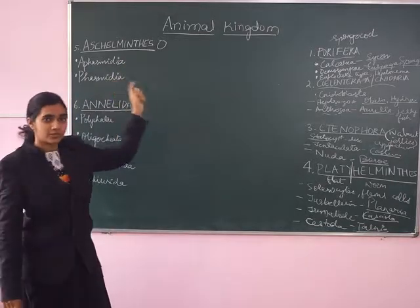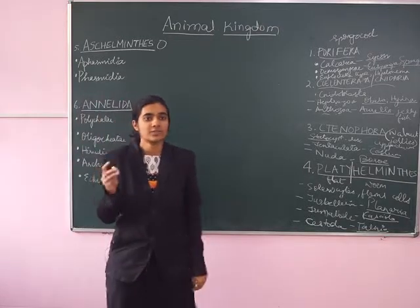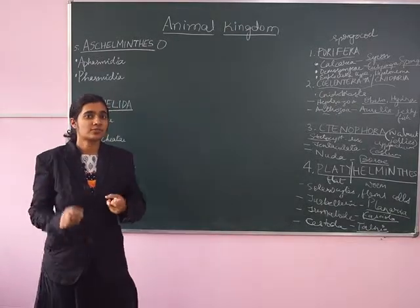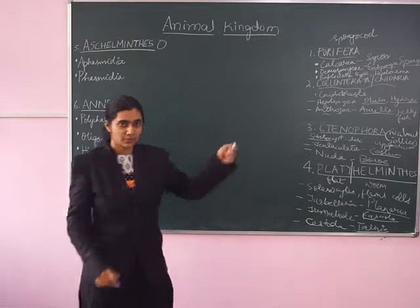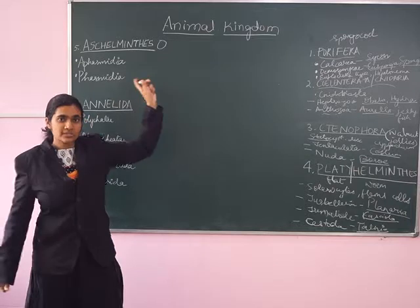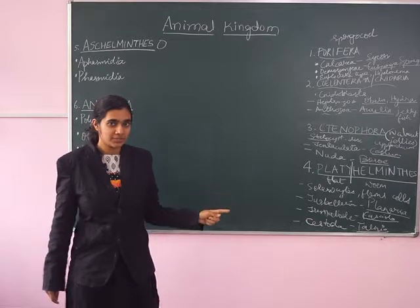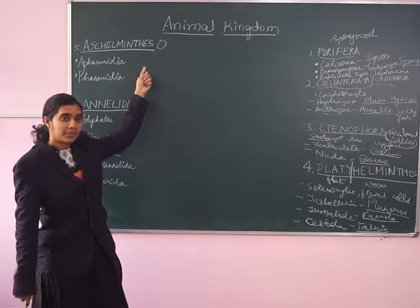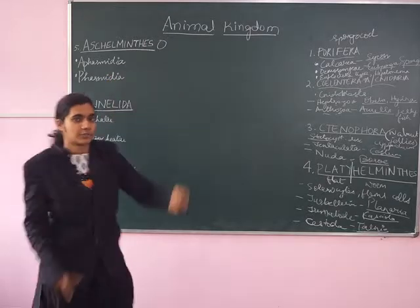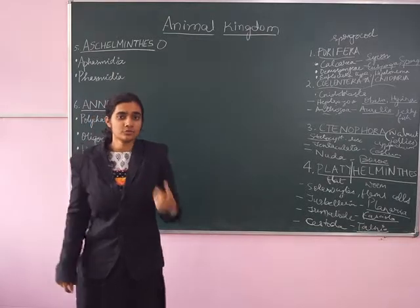One feature of Aschelminthes is that they are pseudocoelmates — they have something called a false coelom. These are also triploblastic and the coelom is formed by the split in the mesoderm of the germ layer of the embryo. The actual coelom formed by the splitting of the mesoderm is filled in by mesenchymal tissue, and therefore the animals are called pseudocoelmates.